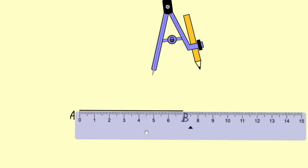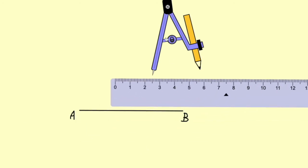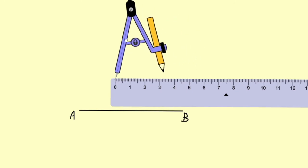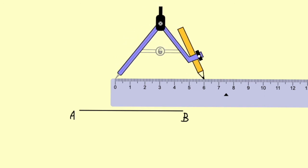Next side is CA, that is 6 cm. So CA will come here. We'll take the compass and in the compass we'll take the measure of 6 cm like this.